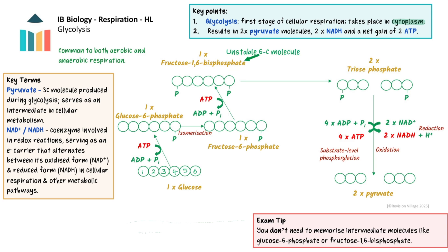This unstable 6-carbon molecule then splits into two 3-carbon molecules called triose phosphate, also known as glyceraldehyde 3-phosphate. Each of these three-carbon molecules is oxidised, reducing NAD to NADH, and during this process four molecules of ATP are produced by substrate level phosphorylation — that's two ATP per triose phosphate.